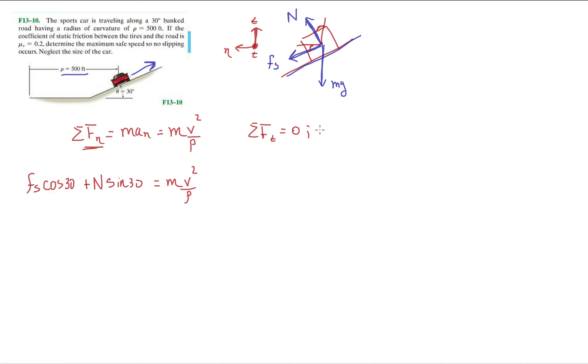So we're going to have minus mg, right? So we have this one, the weight, we have plus the normal cosine 30. And then the friction force is going to be minus Fs sine 30.